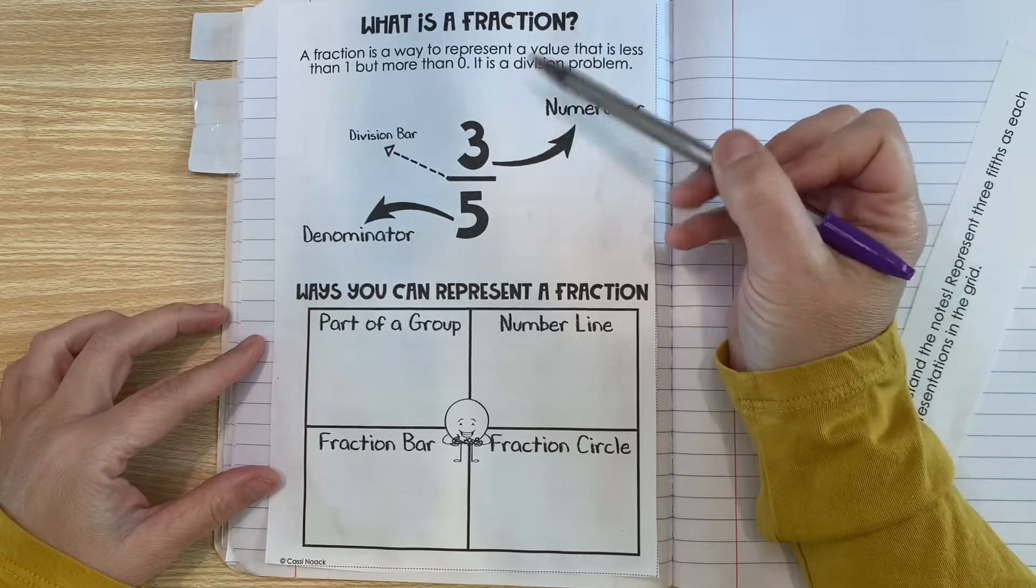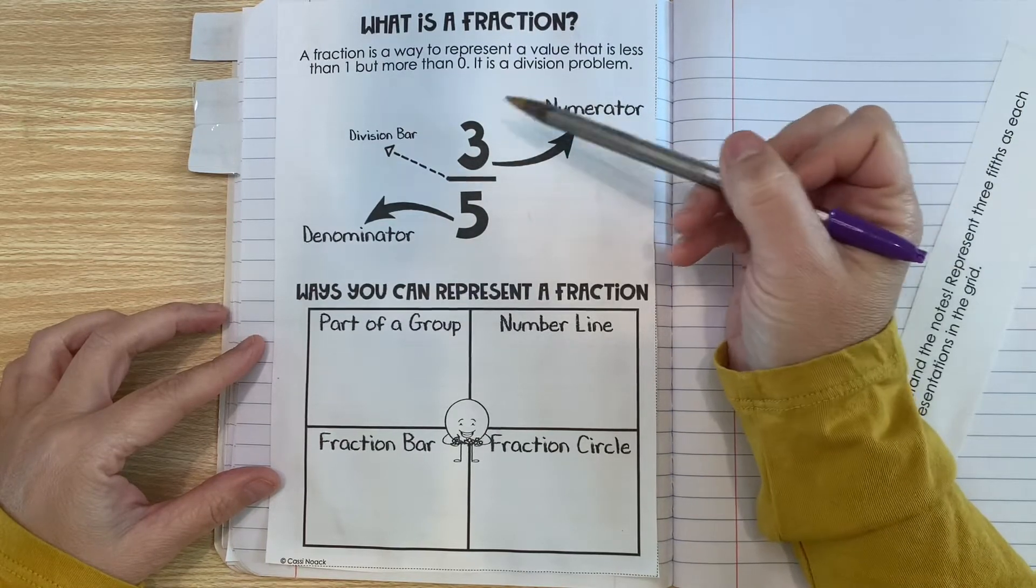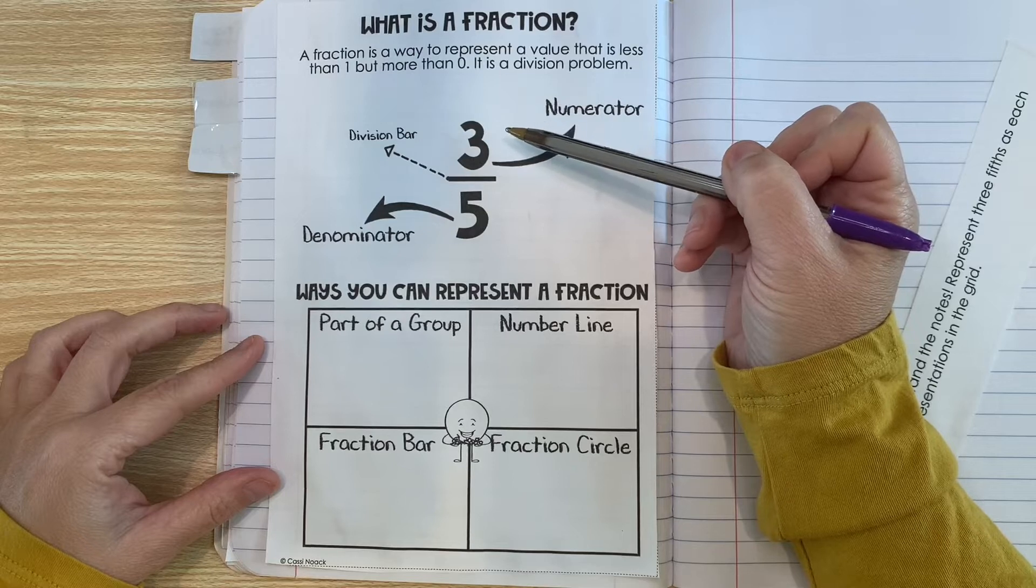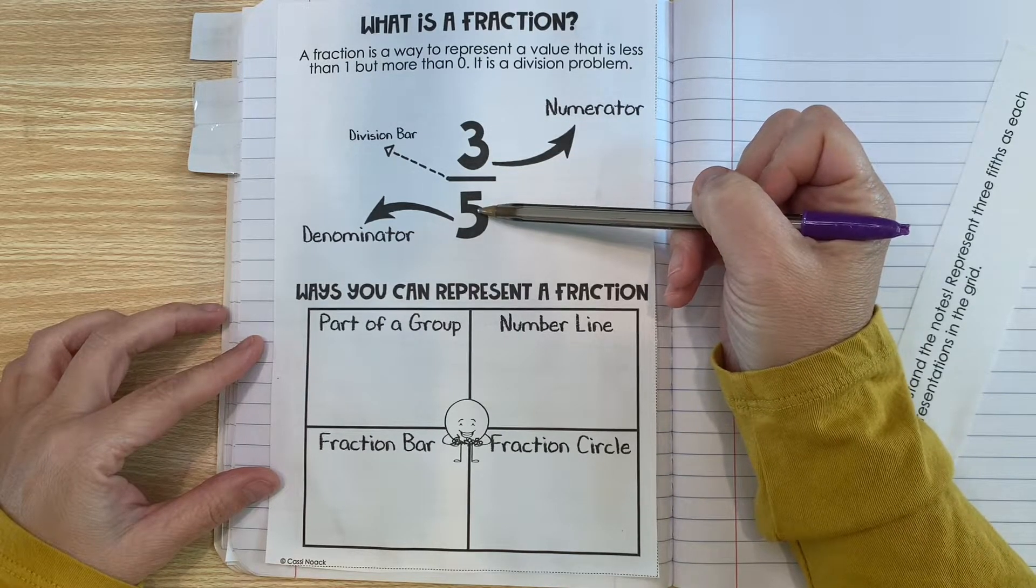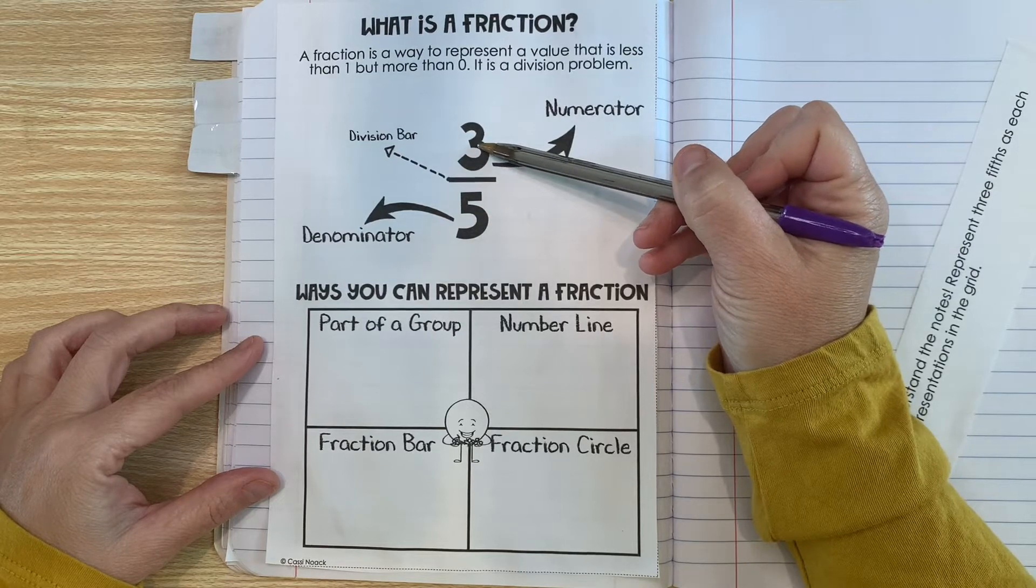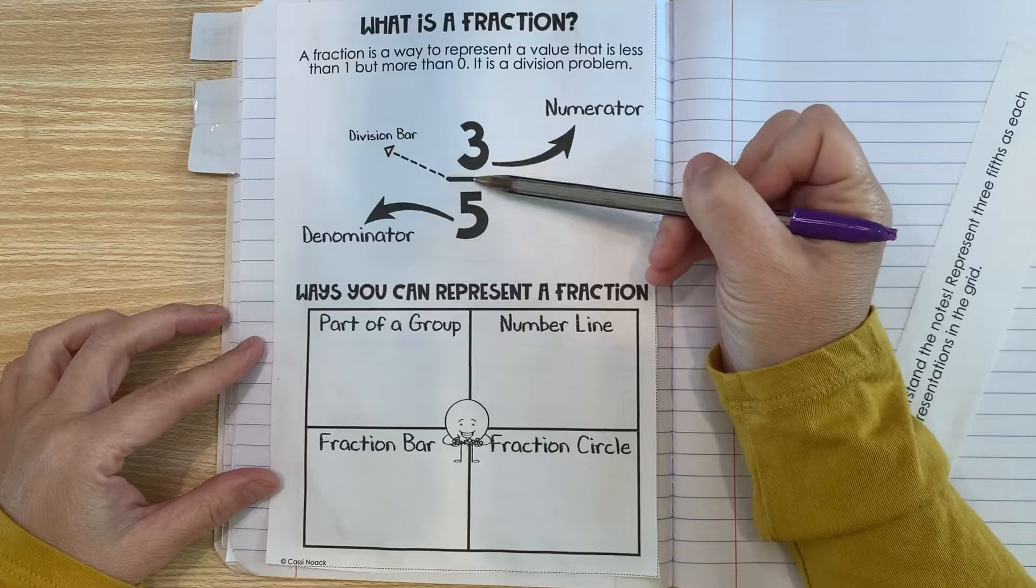So earlier we learned about decimals. A fraction represents the same type of number, something that's less than one but more than zero. The cool thing about fractions is they are a division problem. So this could actually be read three divided by five, or it could be read three fifths.